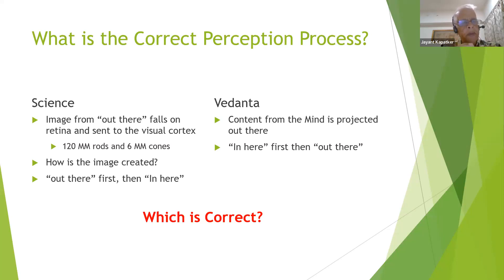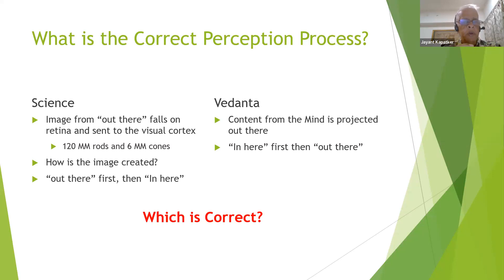And from there, what happens? Science has no clue. It goes into the visual cortex and how is the image created? How do you decode the signal coming from the retina to recreate that image? Science has come to an end there. So science has a lot of limitations there. And Vedanta teaches a completely different philosophy.